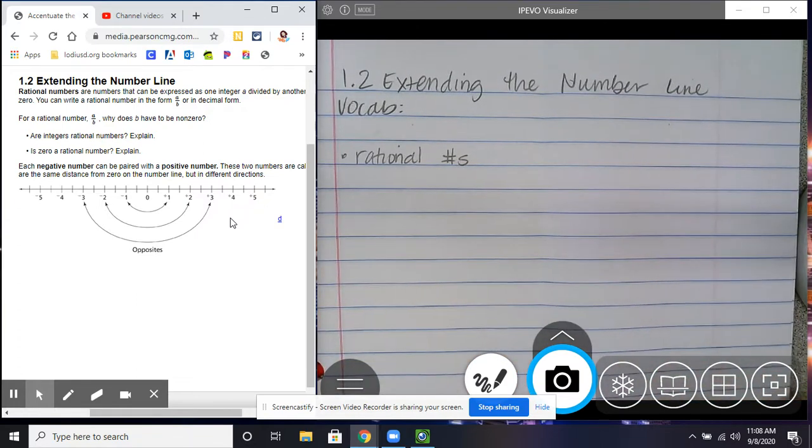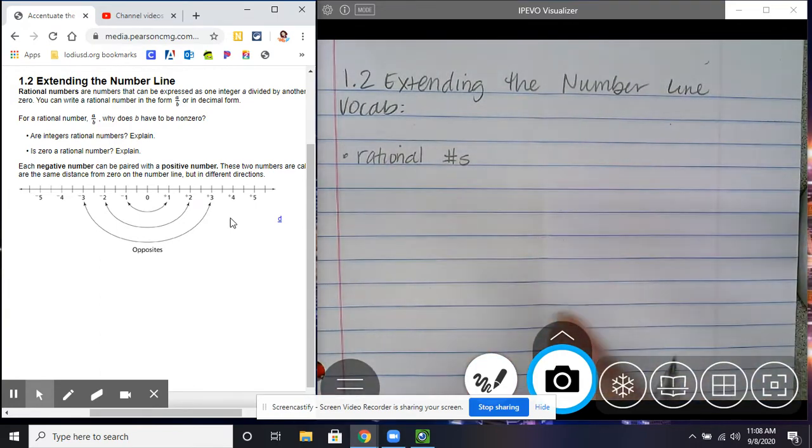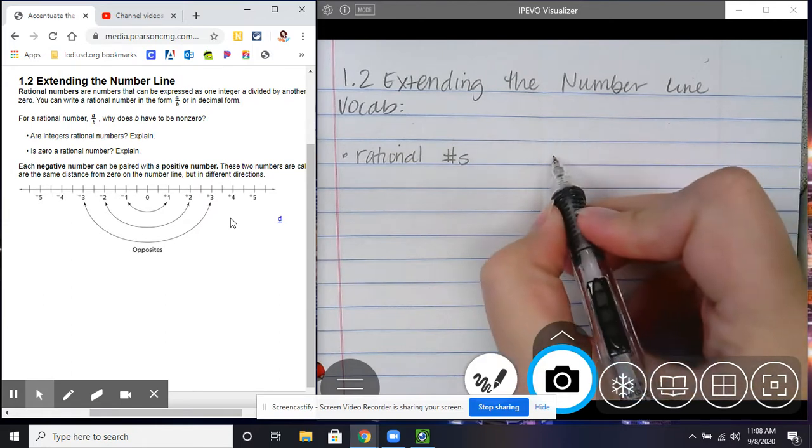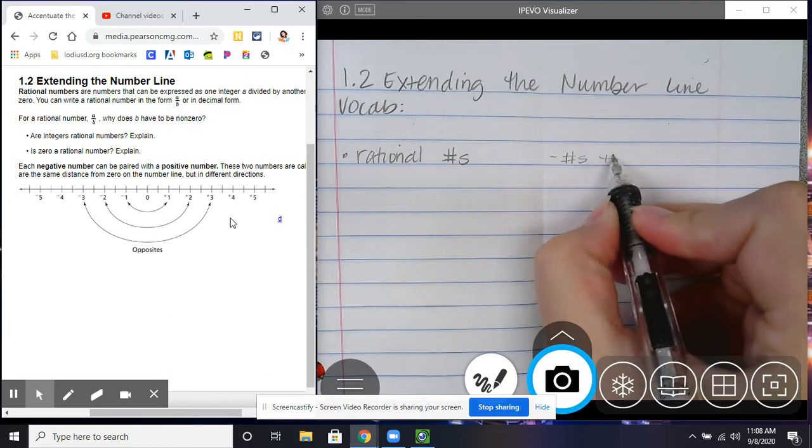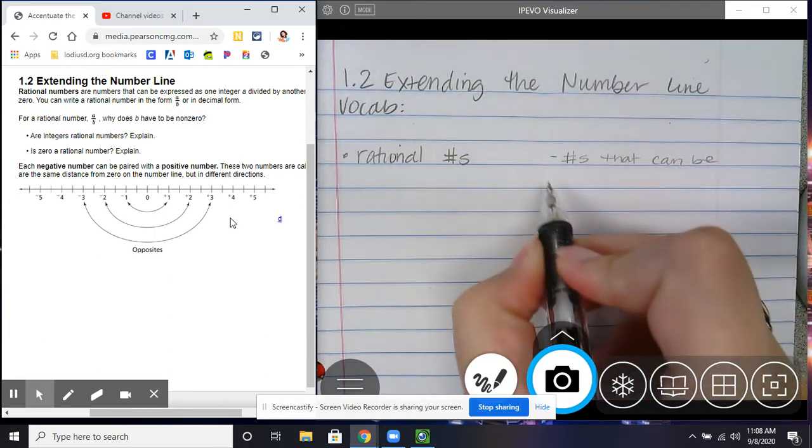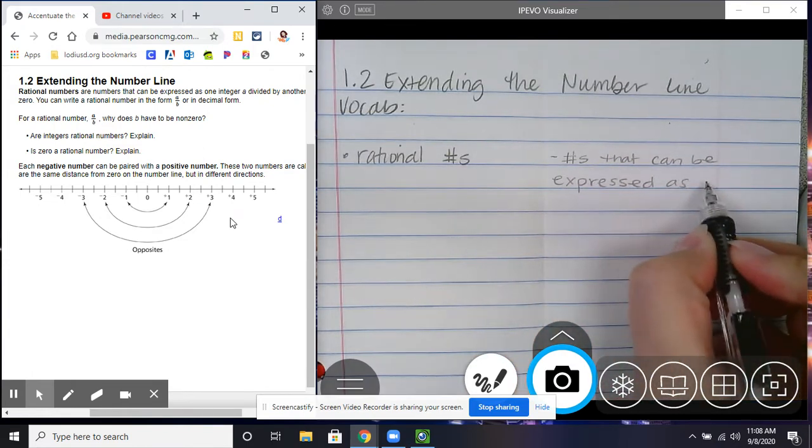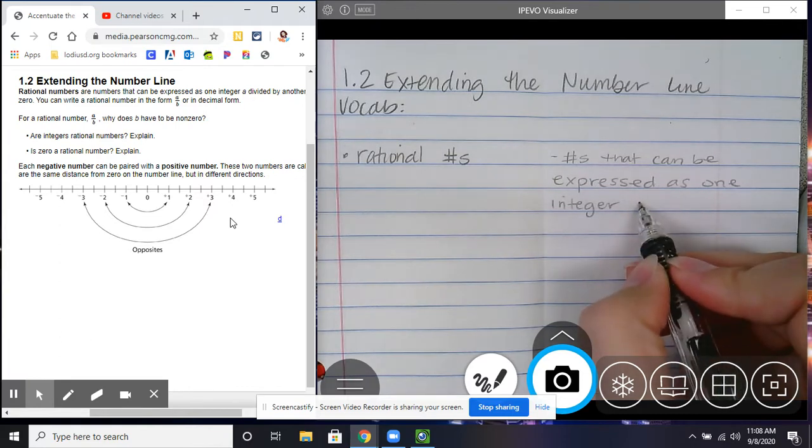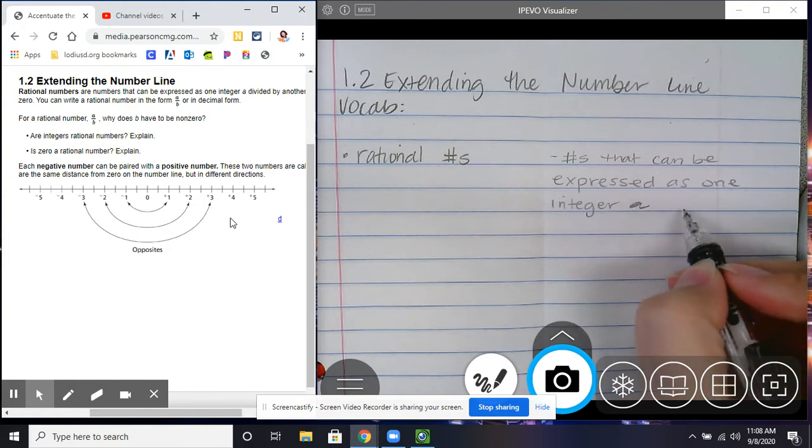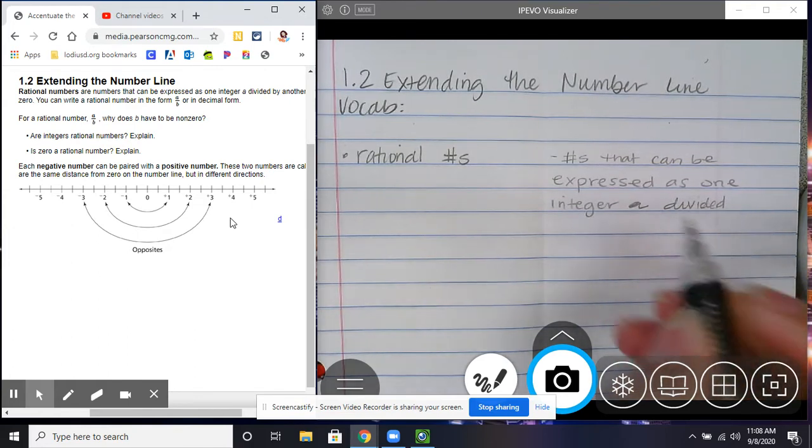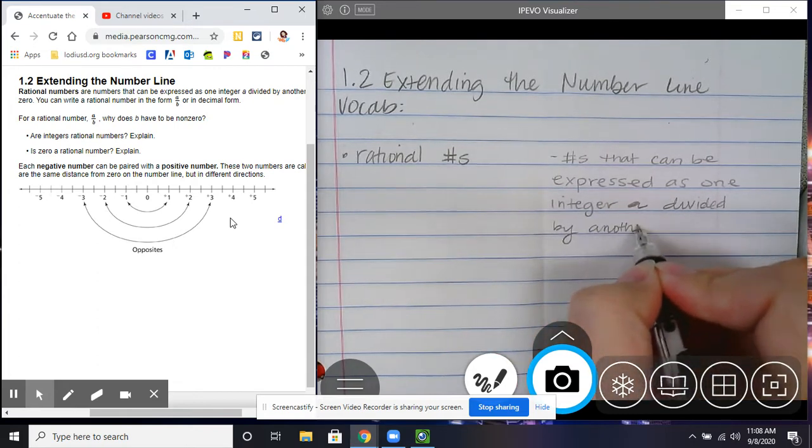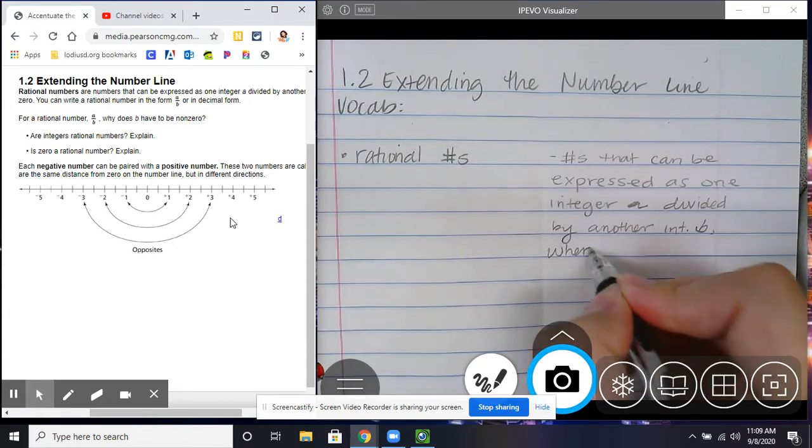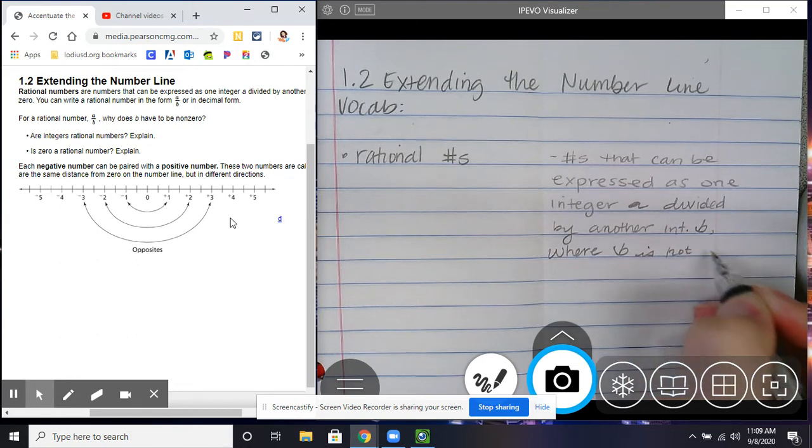I did fold my paper in half so you can kind of see the line there a little bit. If you would like to draw a line, that's fine. So the first one is rational numbers, which are numbers that can be expressed as one integer a, which is like italicized, a, divided by another integer b, where b is not 0.